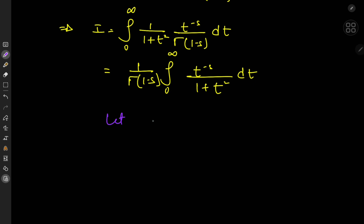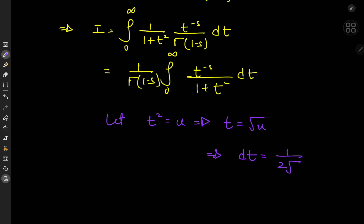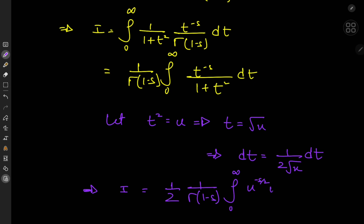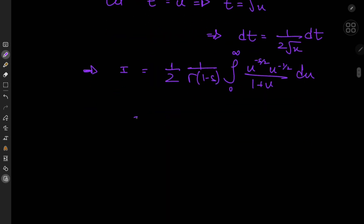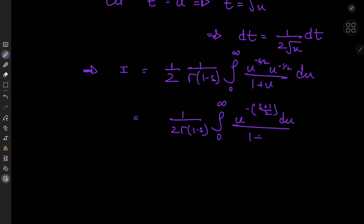For a substitution, let t squared equal u, which implies t equals the square root of u, and dt equals one over two times the square root of u du. The integral in the u world becomes one half times one over gamma(1-s) times the integral from zero to infinity of u to the power of negative s over two times u to the negative one half, divided by one plus u — in other words, one over two gamma(1-s) times the integral from zero to infinity of u to the negative s plus one half minus one, divided by one plus u, du.